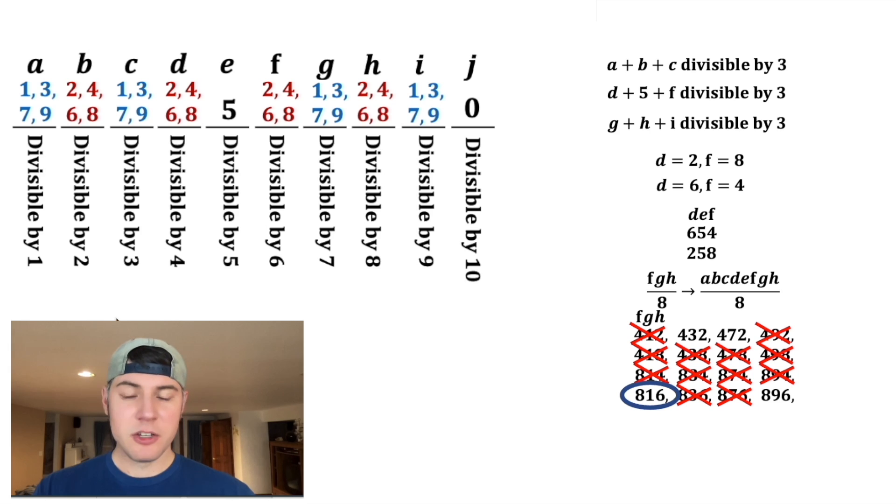Let's look at 8, 1, 6. So this 8, 1, 6 comes from the 258. So in this scenario, G is equal to 1, H is equal to 6, and 1 plus 6 is 7. So in order for 7 plus I to be divisible by 3, I could be 2, but in this scenario, D has to be 2. I could be 5, but E has to be 5. And I could be 8, but F is already 8. So this is not possible. So 8, 16 is not a possibility.